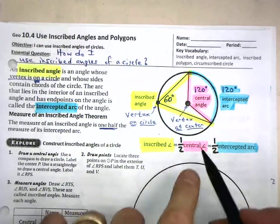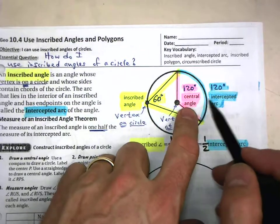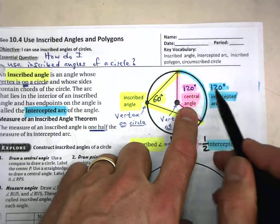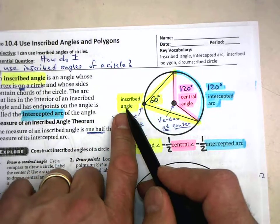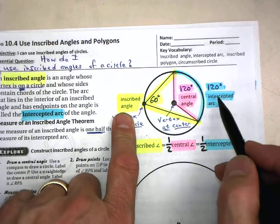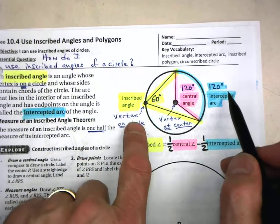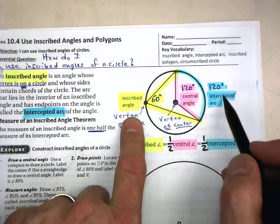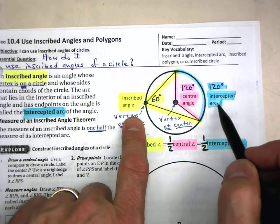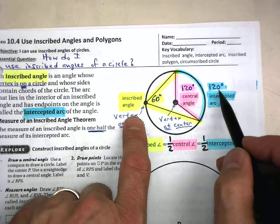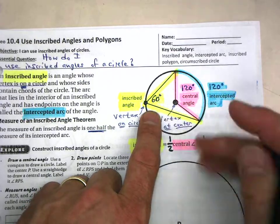That one half is really important. With a central angle and intercepted arc, they're equal. But with an inscribed angle and its intercepted arc, it is one half — the inscribed angle is one half of its intercepted arc. So if this is 120, multiply that by one half and you get 60.